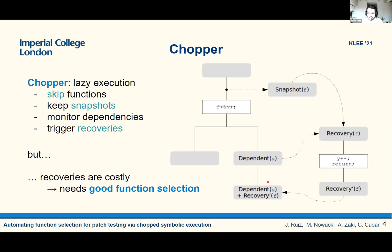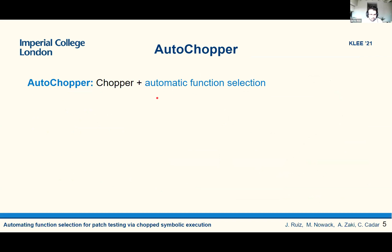One problem with this approach is that recoveries are costly. If you have a lot of dependencies to a function, then you are going to trigger as many recoveries, and it may not be worthwhile to skip it because the recoveries are going to be more expensive than just executing the function in the first place. So in order for this approach to work efficiently, it needs good function selection, usually provided by a user. The tool we are developing, AutoChopper, aims to automate this function selection. It is essentially Chopper with automatic function selection.